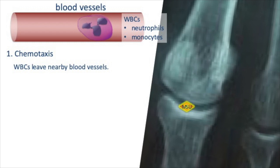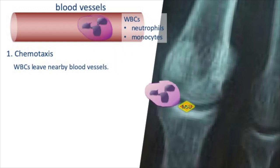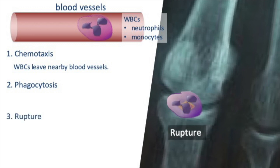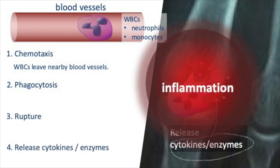White blood cells move toward monosodium urate — this is chemotaxis — followed by phagocytosis of MSU, and then release of cytokines and chemokines, causing severe inflammation.